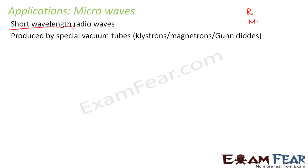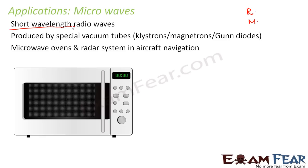Microwaves are produced by special vacuum tubes such as klystrons, magnetrons, or gun diodes. Understanding these devices in detail is not required at this level — you will study them when you do higher studies in physics. The important applications include microwave ovens and the radar system in aircraft navigation, both of which I will discuss in detail.